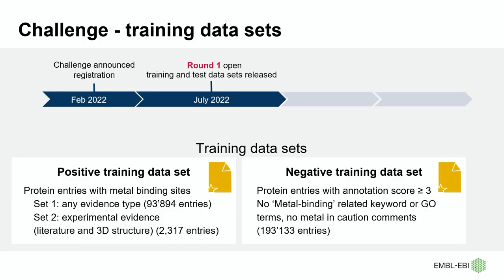We set up a challenge for the AI community to create accurate and scalable computational methods to predict metal-binding sites across all of UniProt. In February last year we announced the challenge and participants registered. In July last year, we opened the first round and released training and test datasets. For the training data, we provided two types: a positive training set of SwissProt proteins with metal-binding sites annotated — one subset including all sources of evidence, another restricted to experimental evidence only.